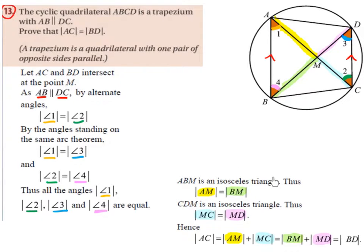Triangle ABM is an isosceles triangle because we have proven that angle 1 is equal to angle 4. Since these two angles are equal, the two opposite sides must also be equal. So the length AM is equal to the length BM — the yellow line equals the green line.